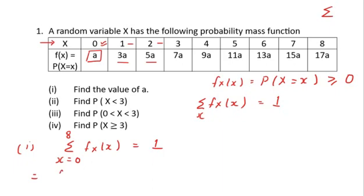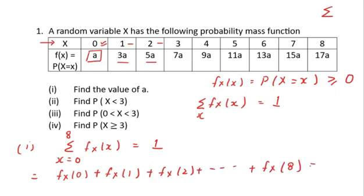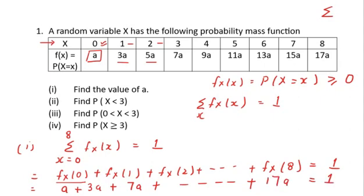Expanding this: f_X(0) + f_X(1) + f_X(2) + ... + f_X(8) = 1. Now f_X(0) equals a, f_X(1) equals 3a, and continuing this pattern gives a + 3a + 5a + 7a + ... + 17a = 1.